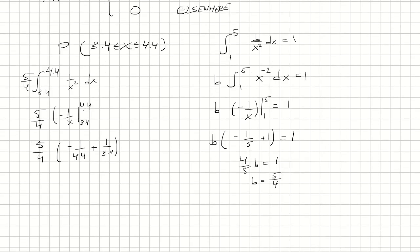At this point, we're going to bring this all under one fraction, so negative 1 over 4.4 plus 1 over 3.4. That's going to be 1 over 14.96, and then we're going to multiply that by 5 fourths to get 0.0835561. And that's my probability.